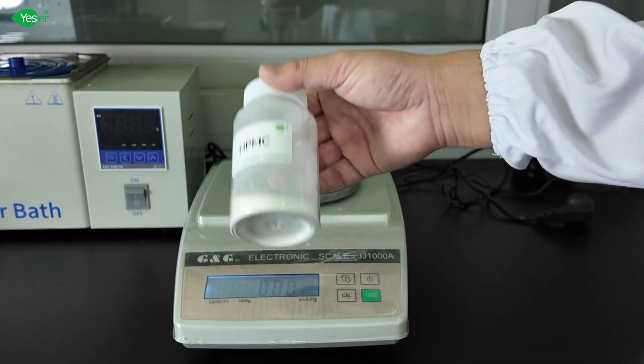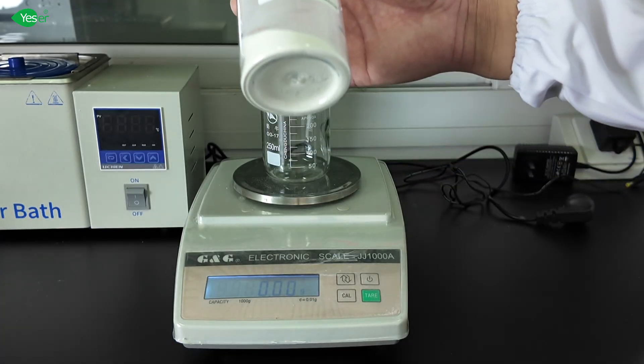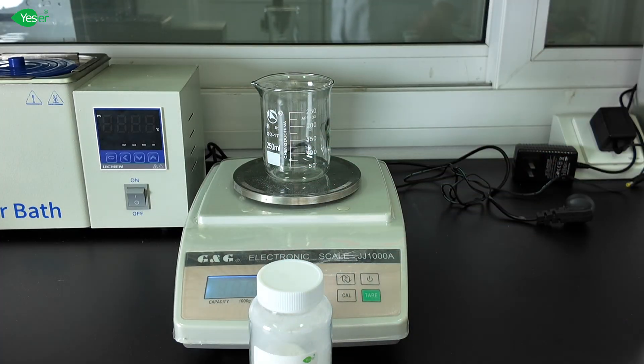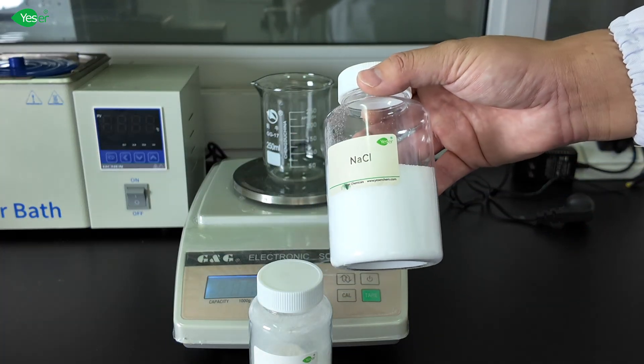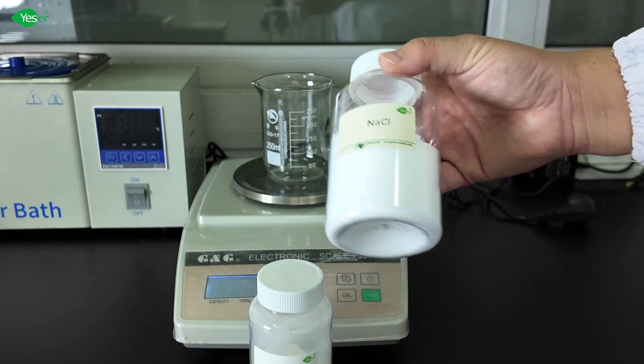There is a very simple trick to solve this clumping issue when dissolving HPMC in water or in surfactant solution. That basically is to pre-mix HPMC with the salt that you need to have in your formula.